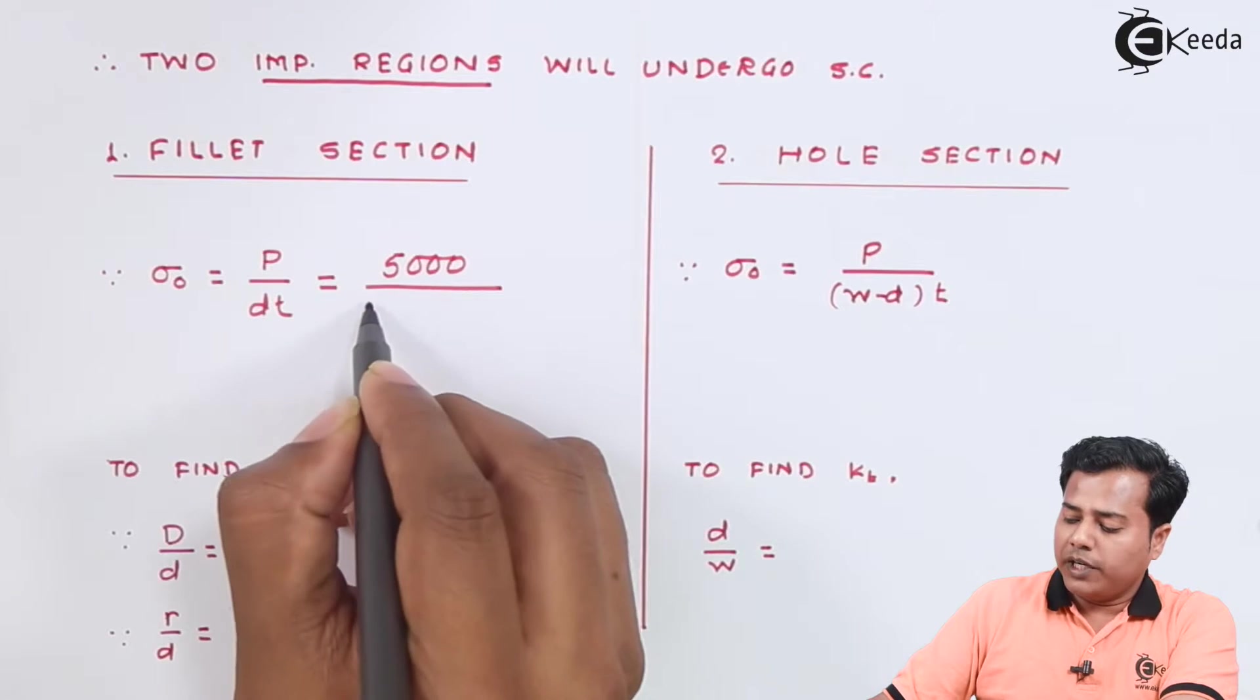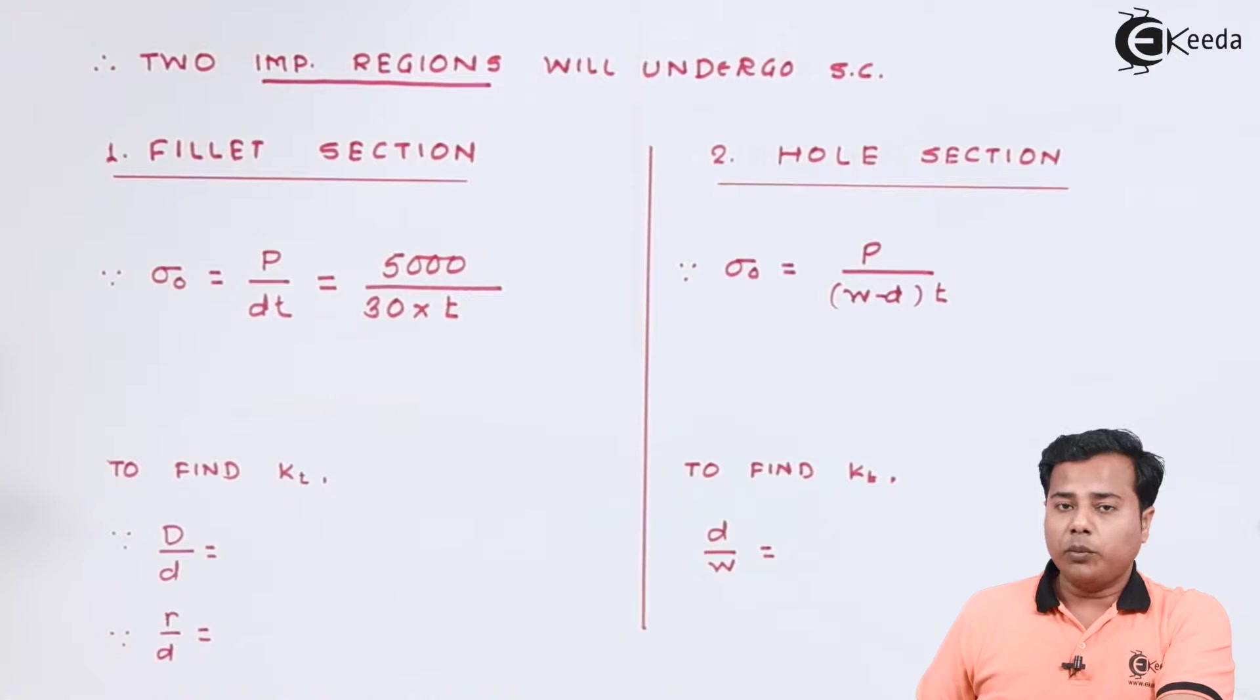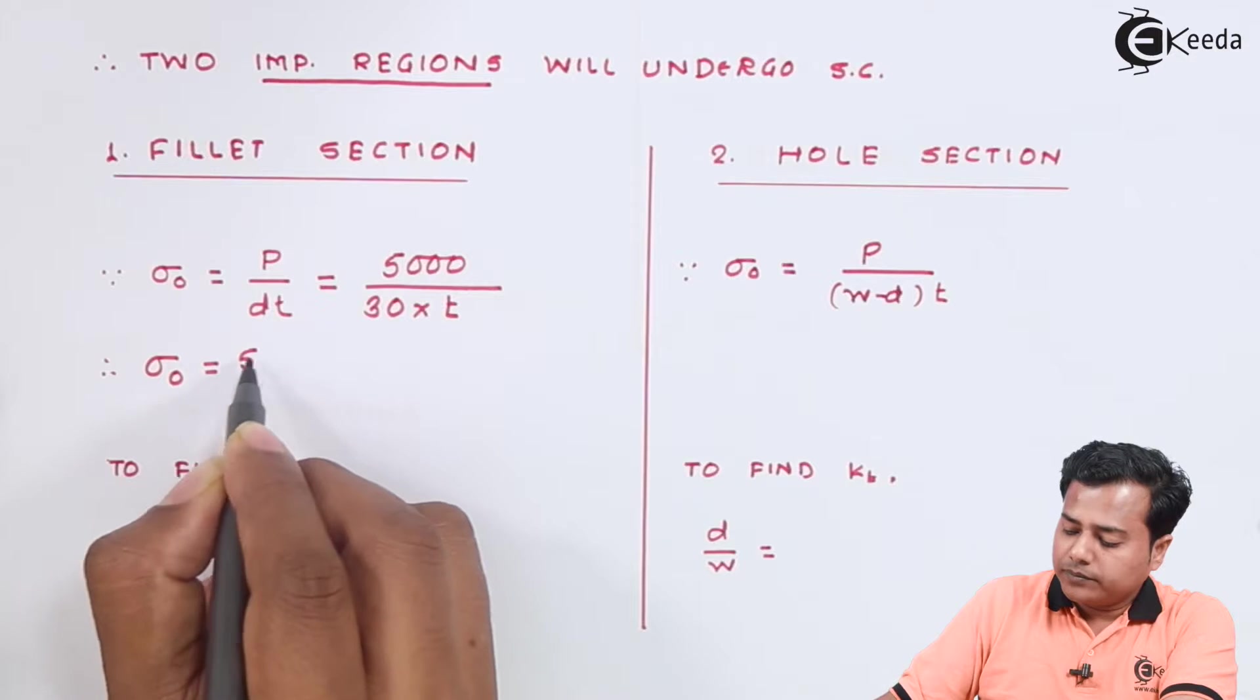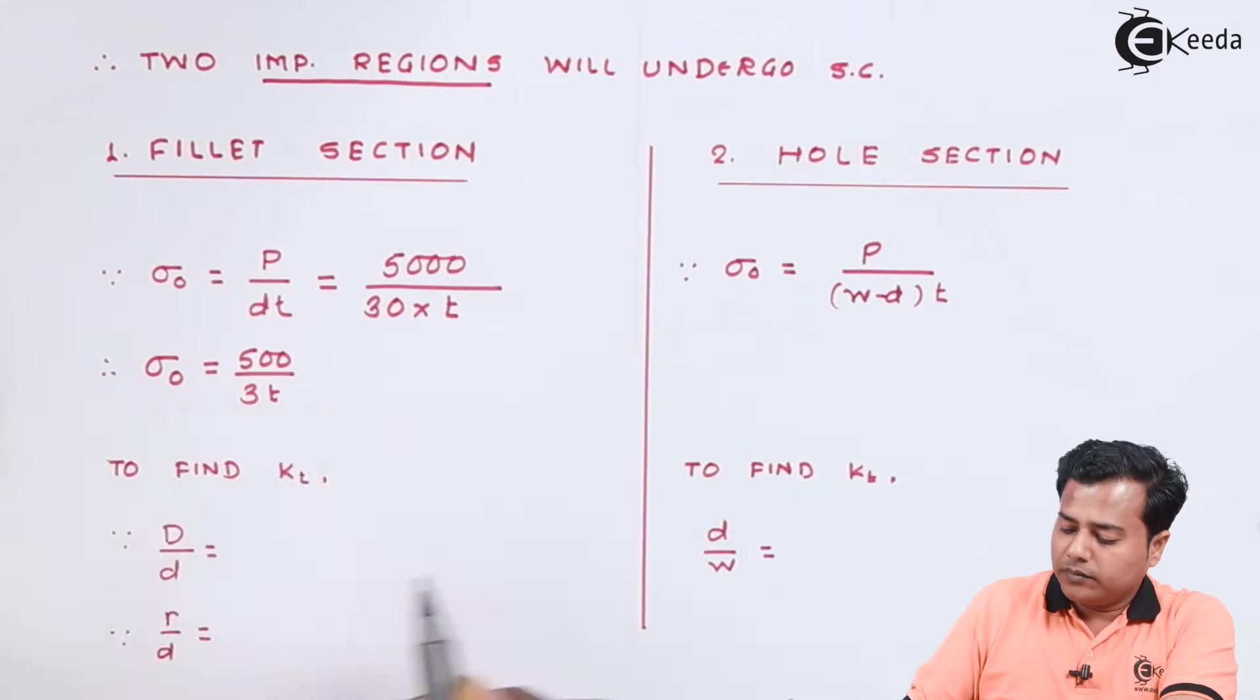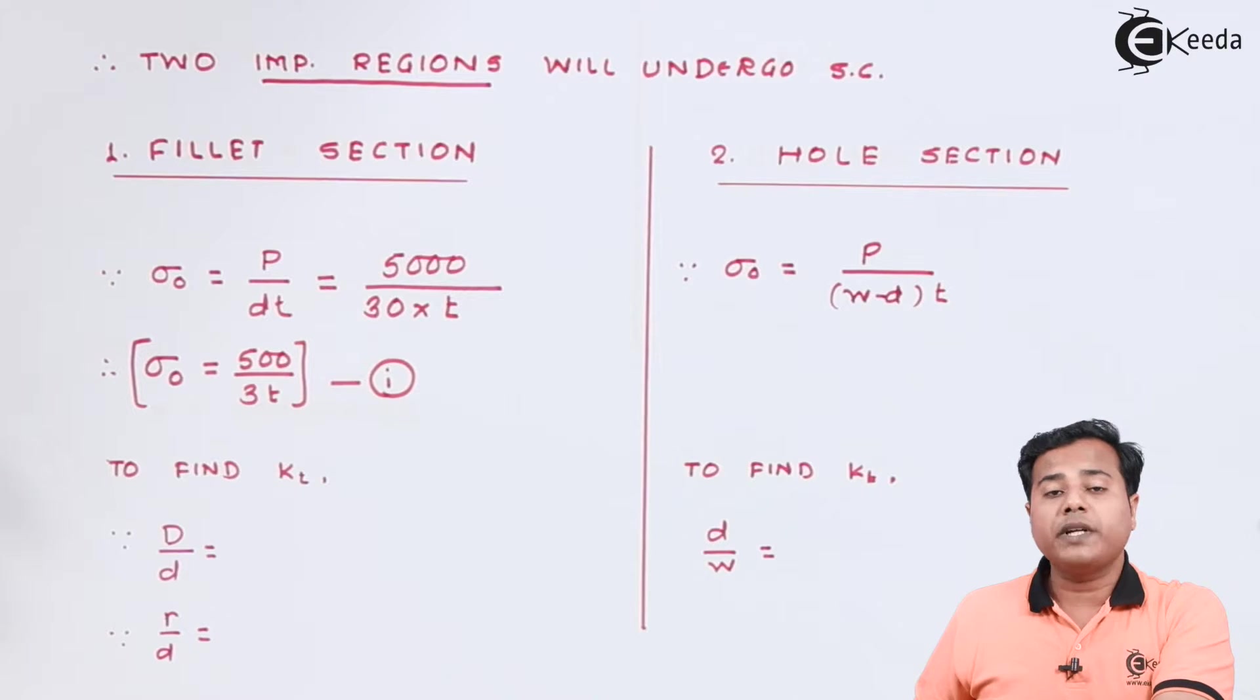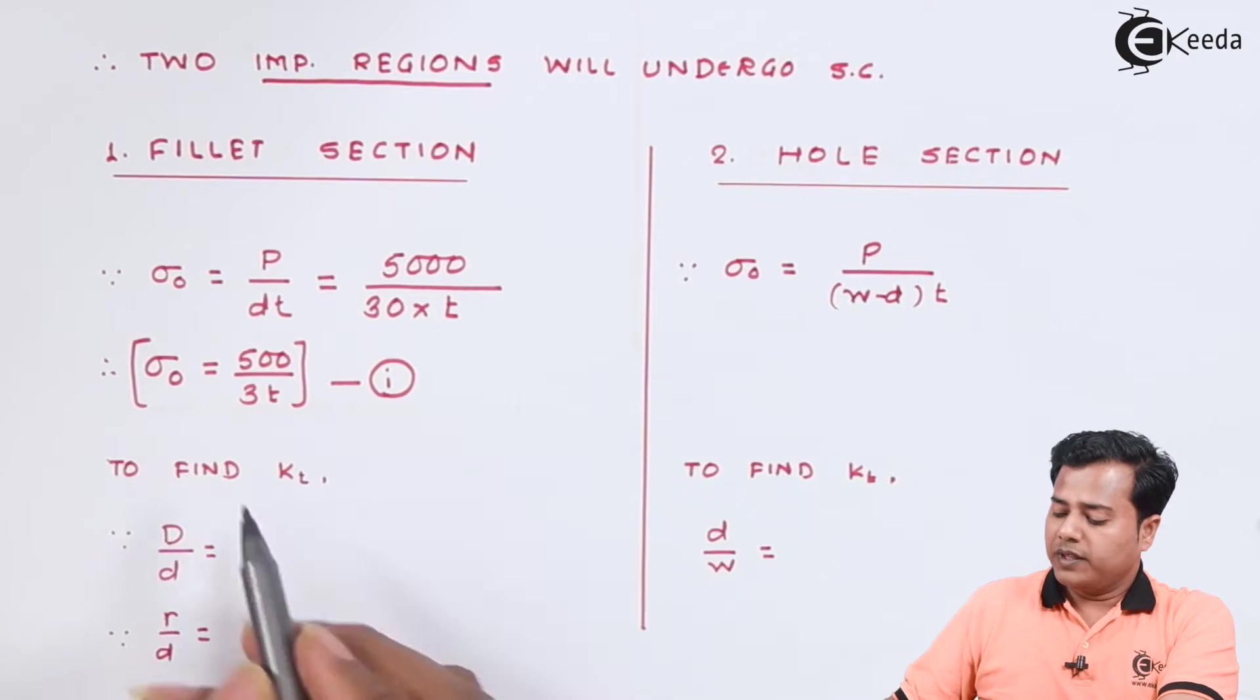The nominal thickness actually becomes 500 divided by 3t. So this is what the expected value of stress that will occur in this particular member. Now let us find out the stress concentration factor for the given case.